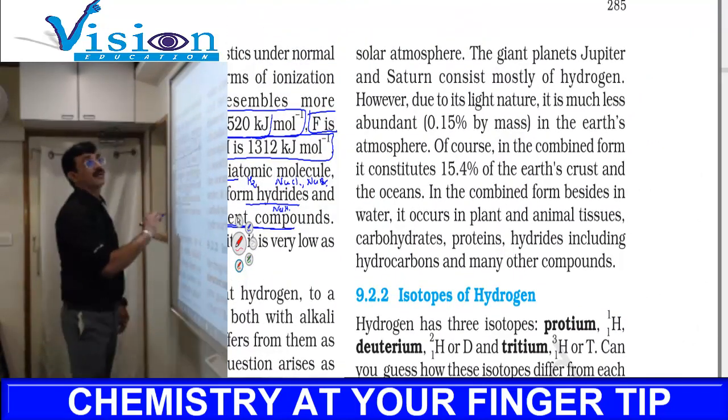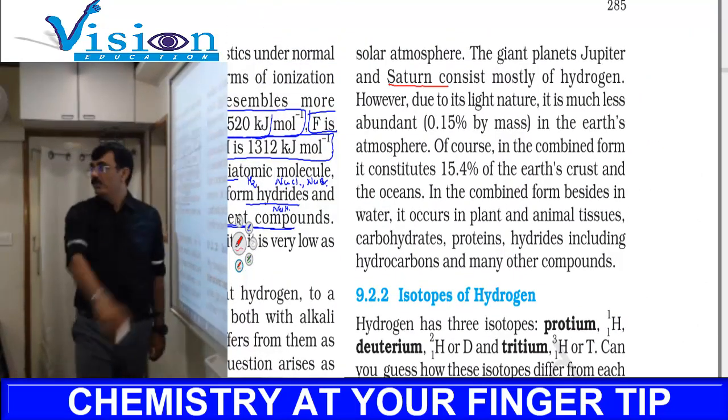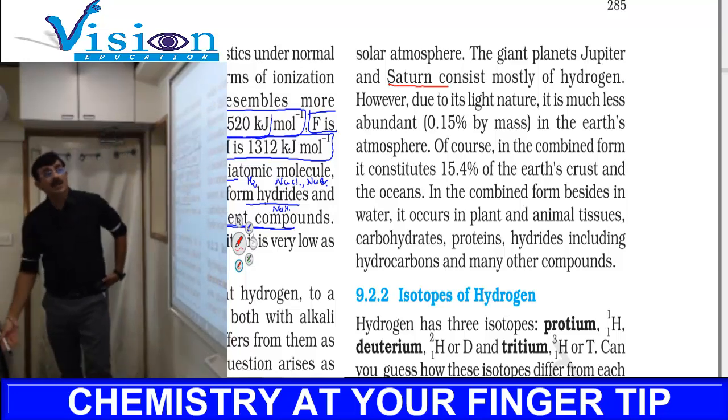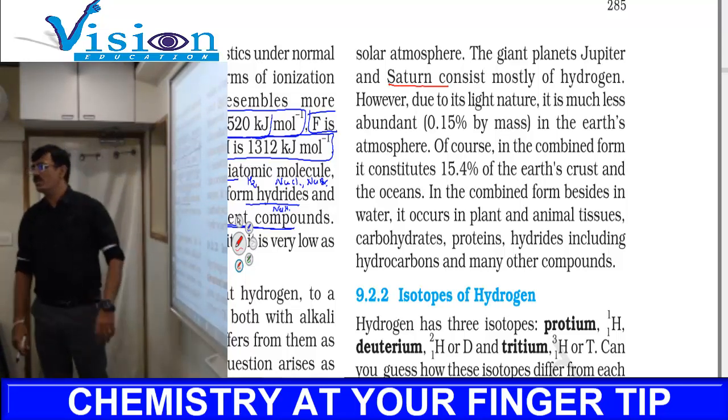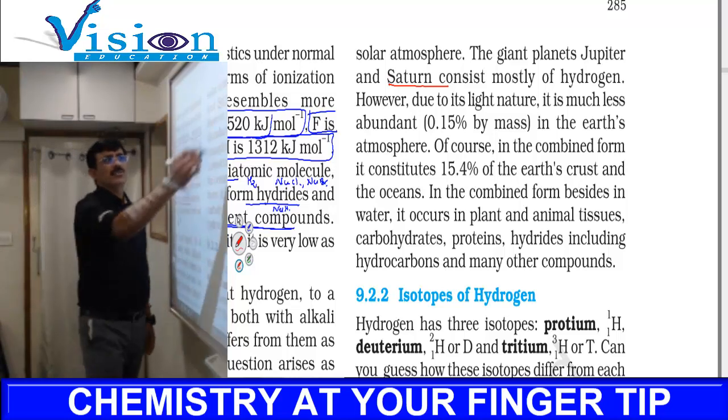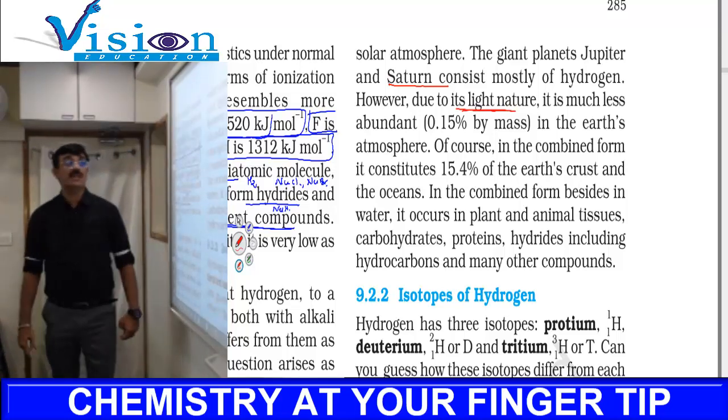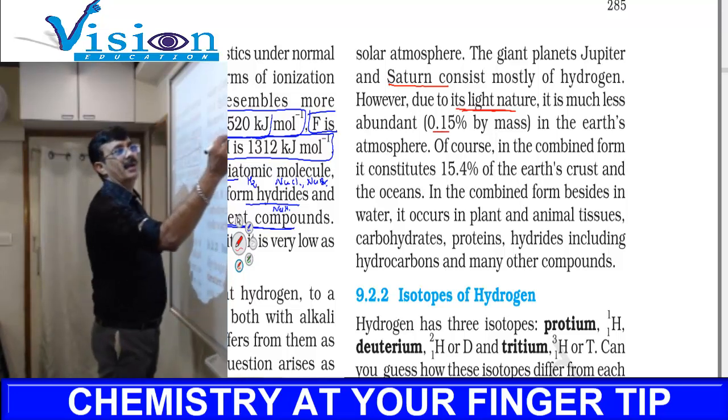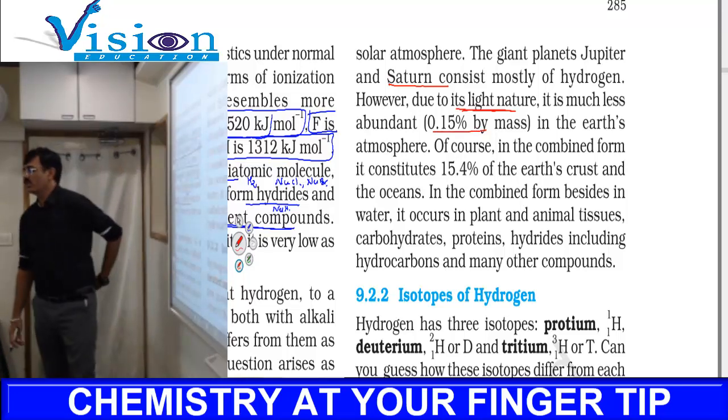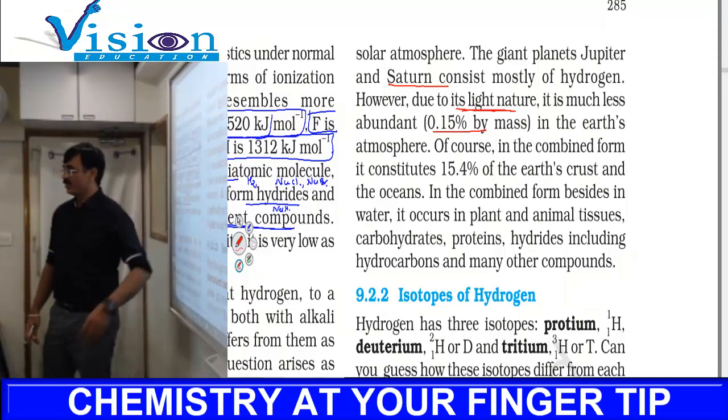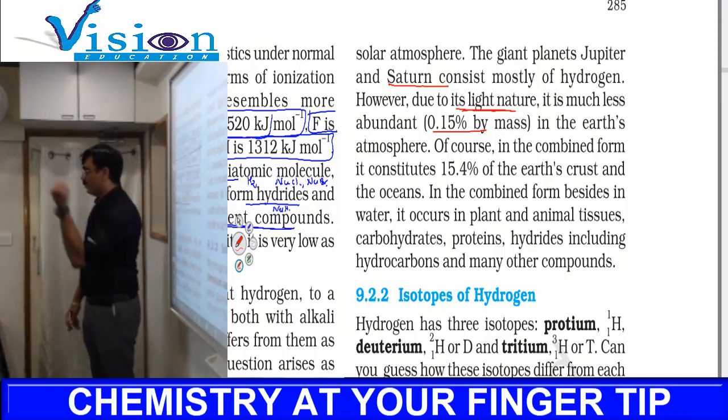Giant planets like Jupiter and Saturn have mostly hydrogen. However, hydrogen is light in nature and on Earth it's only normally 0.15% because Earth's gravitational field is not that great as Jupiter or Saturn, so they pull it very strongly.